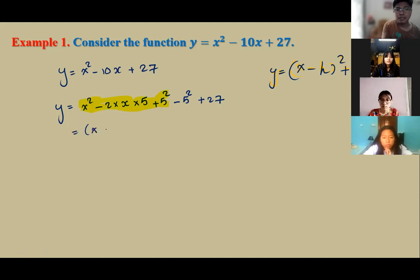It's minus minus five, the whole square. Minus 25 plus 27. 27. x minus five, the whole square plus two. x minus five, the whole square plus two.